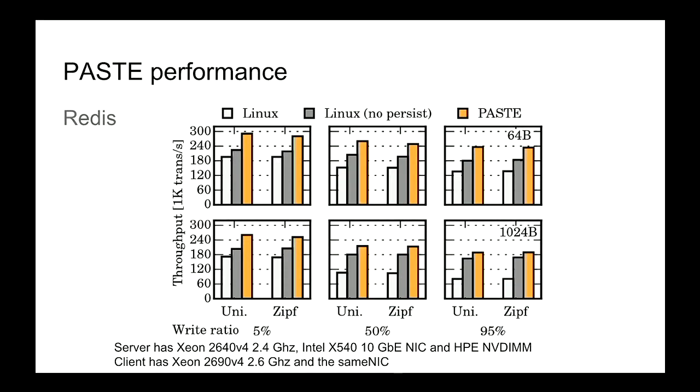We also ported PACE to Redis, the popular persistent key-value store, directly DMAing packets onto NVM. We tried different write sizes (64 bytes and 1 KB), varied the write ratio, and tested both uniform and Zipfian (0.99) key distributions. The two circles correspond to YCSB benchmark workloads (read-mostly and update-heavy). Compared to Linux, PASTE shows much higher performance — even beating Linux configured with persistence disabled.